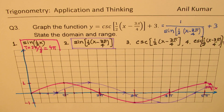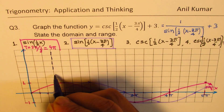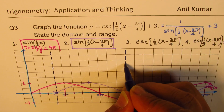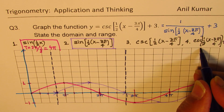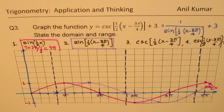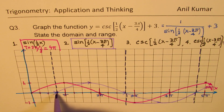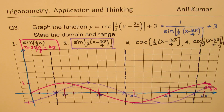Now for the reciprocal: at the zeros of the sine function we get vertical asymptotes. These vertical asymptotes are not part of the domain — that is the restriction for cosecant. Since it's a periodic function, the same pattern appears on both sides, and we have a minimum at this point.